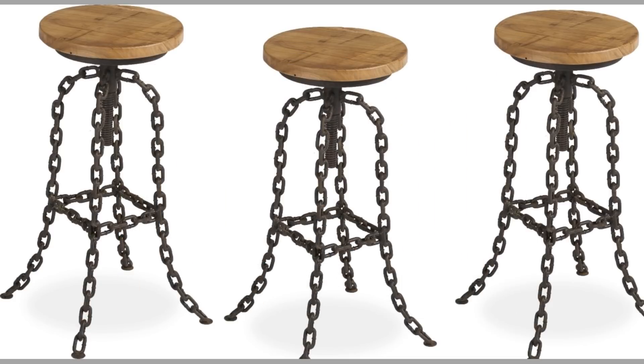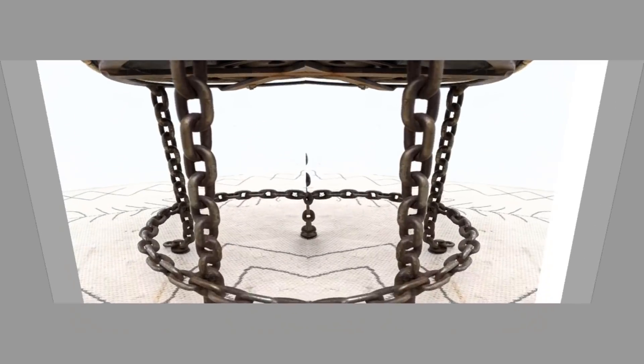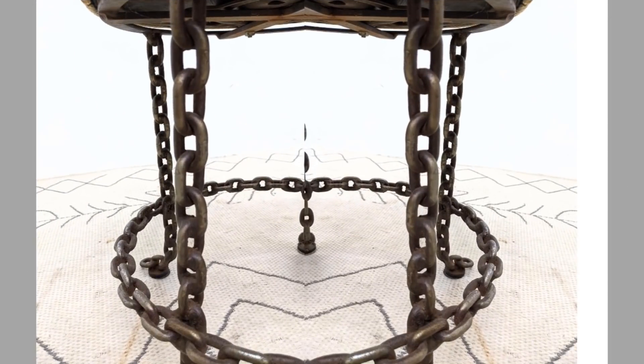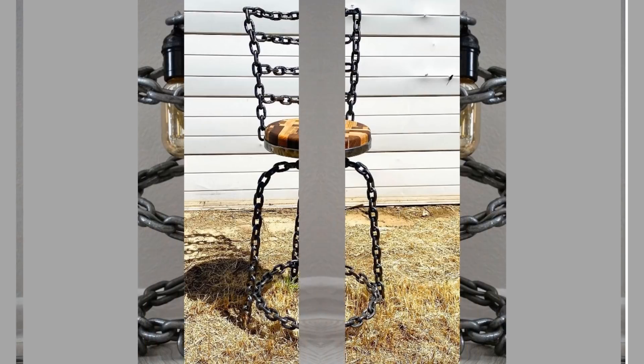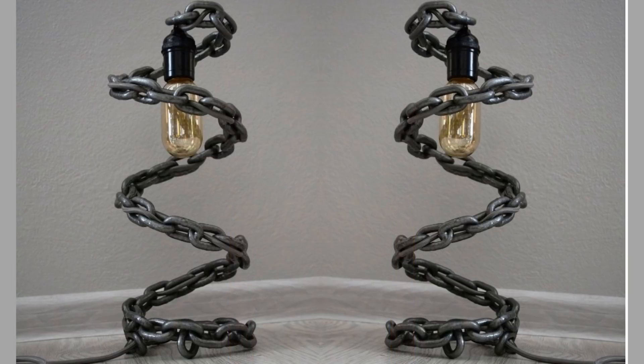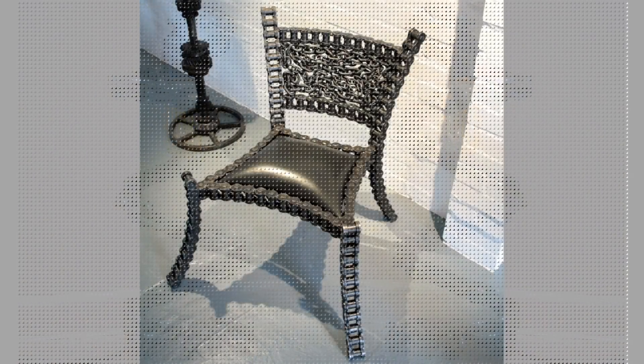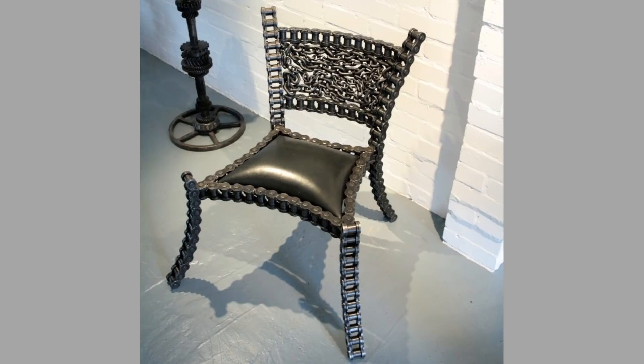On some hoists, coil chains run on a special pulley with recesses in which the chain fits. A variant of the coil chain is a stud-link chain, each of whose links has a bar or stud across its inside width.